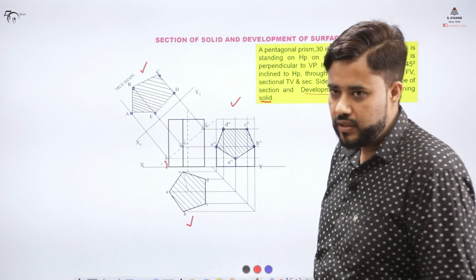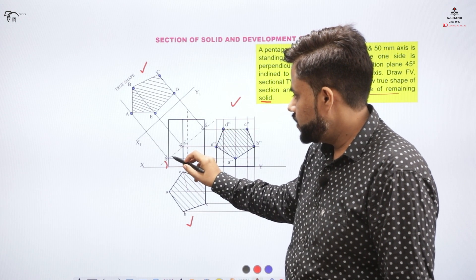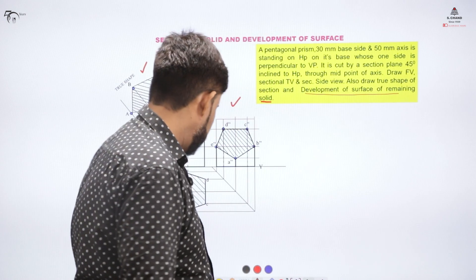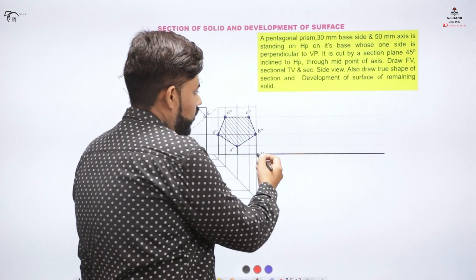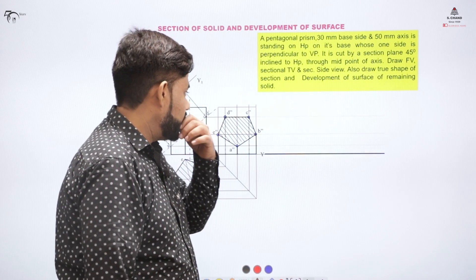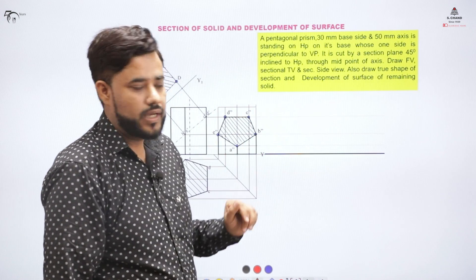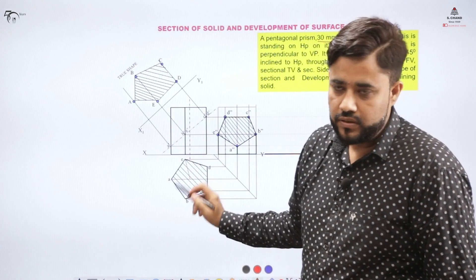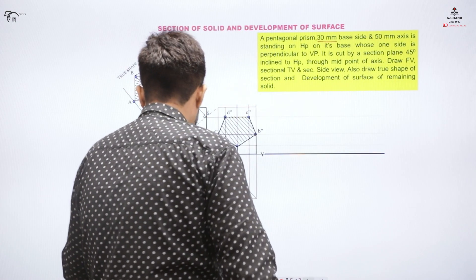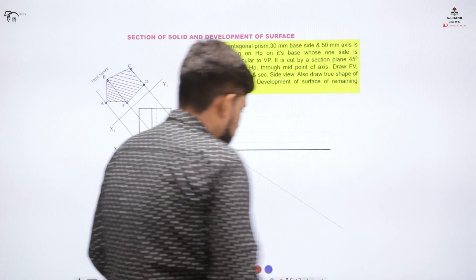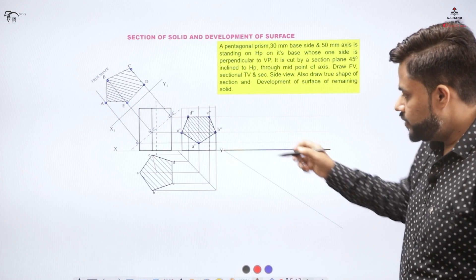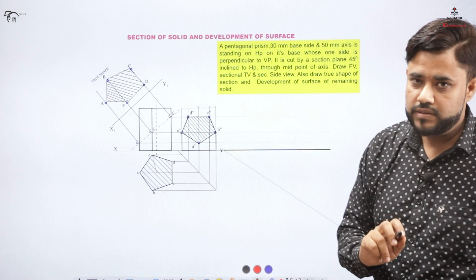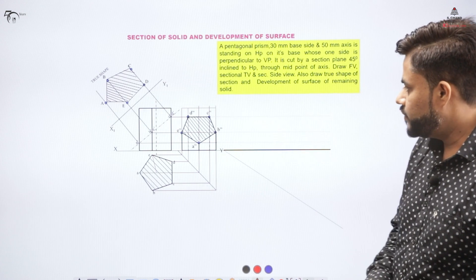Now we'll look at the development of the surface of the remaining solid after the cut. The procedure starts by drawing a line whose length equals the circumference of the pentagon. The side of the pentagon is 30 mm, so 30 × 5 = 150 mm. I draw a line of length 150 mm and divide it into 5 equal parts.